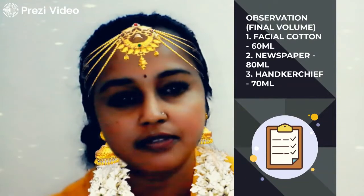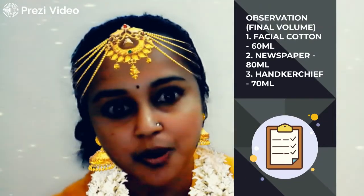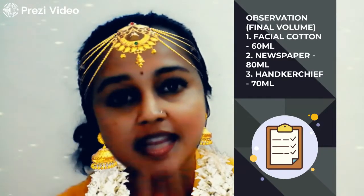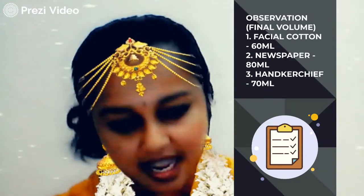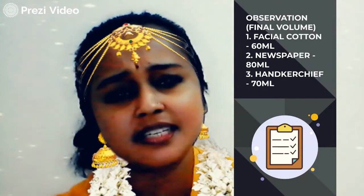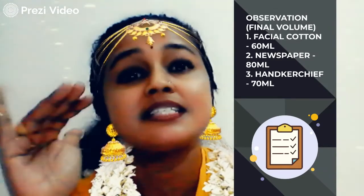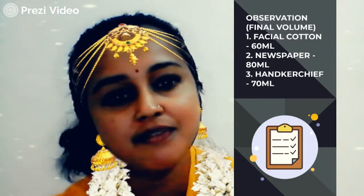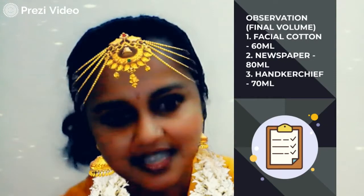Before we go to the questions, the key thing to understand is: the initial volume in all measuring cylinders was 100 ml, but after taking out the objects at 30 seconds, the water level decreased. Facial cotton: 60 ml remaining, newspaper: 80 ml, handkerchief: 70 ml — so water level decreased in all cases.